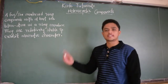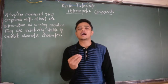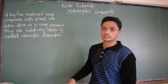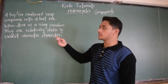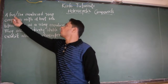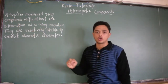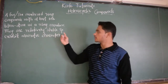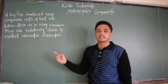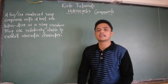In this class we are going to discuss about heterocyclic compounds. We should know what they are. I have written the definition at this corner. A heterocyclic compound is a 5 or 6 membered ring compound with at least one hetero atom as a ring member. These are relatively stable and exhibit aromatic character.